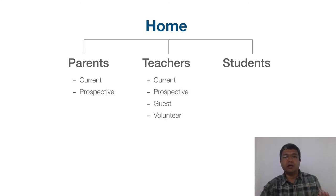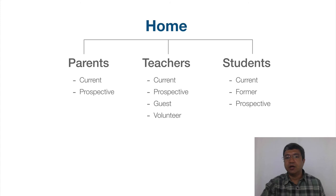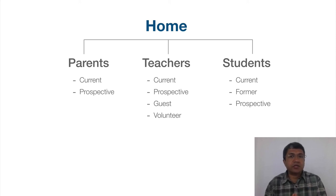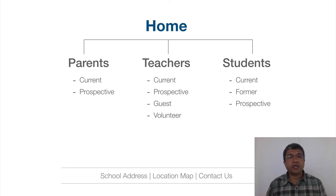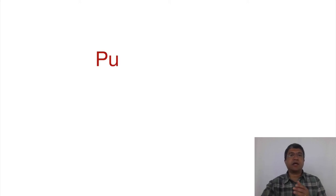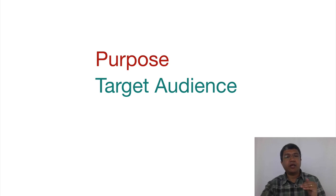Within those main sections there are subcategories — current, prospective, guests, volunteers, former students, and so on. Our site map has a landing page and either subsections within it or different pages addressing the specific information needs of each target audience. We will also have a general section with information required by all categories — things like school address, location map, and how to get in touch via email or phone number.